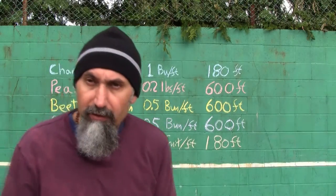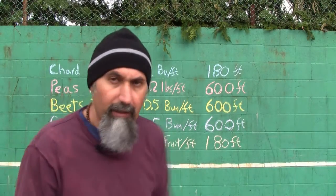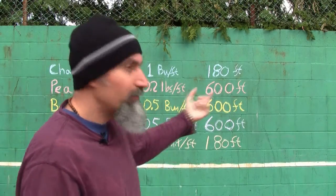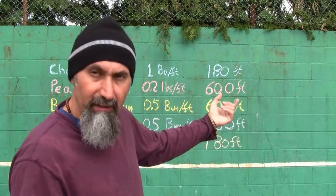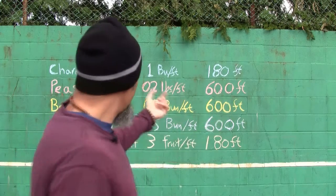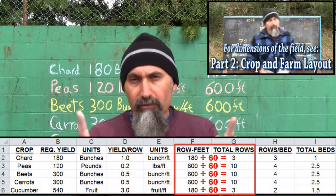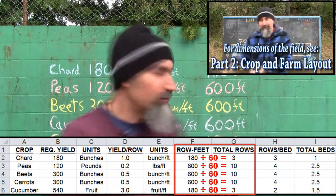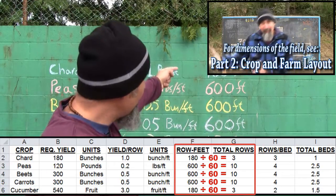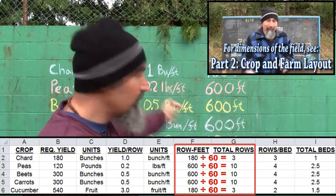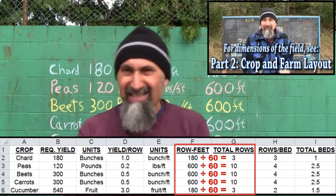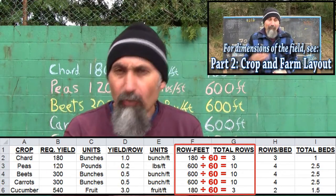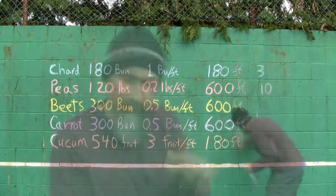To figure out how many rows that equals, we know our rows are 60 feet long, so we divide each of those numbers by 60. That gives us the total number of rows we need for each crop.